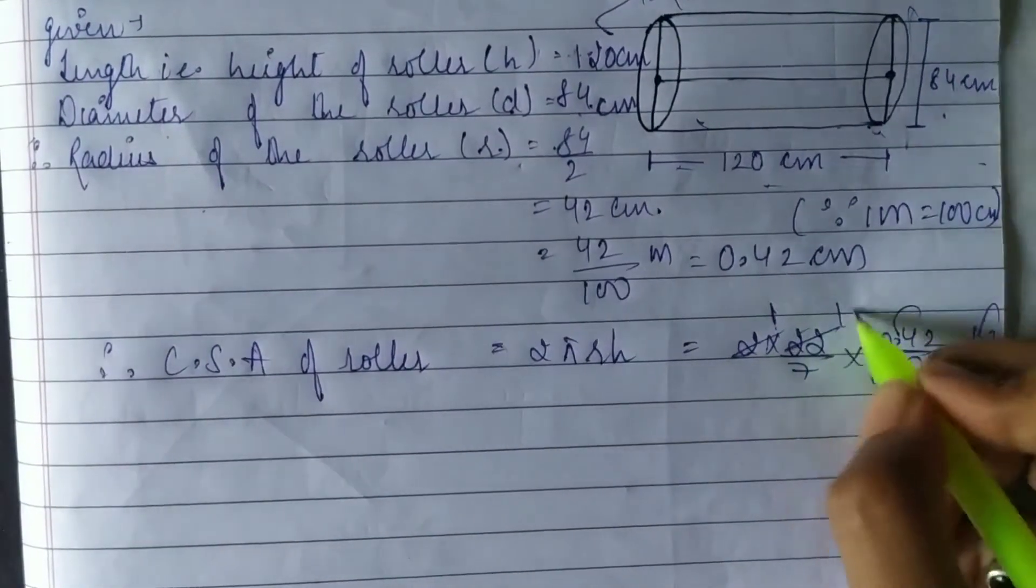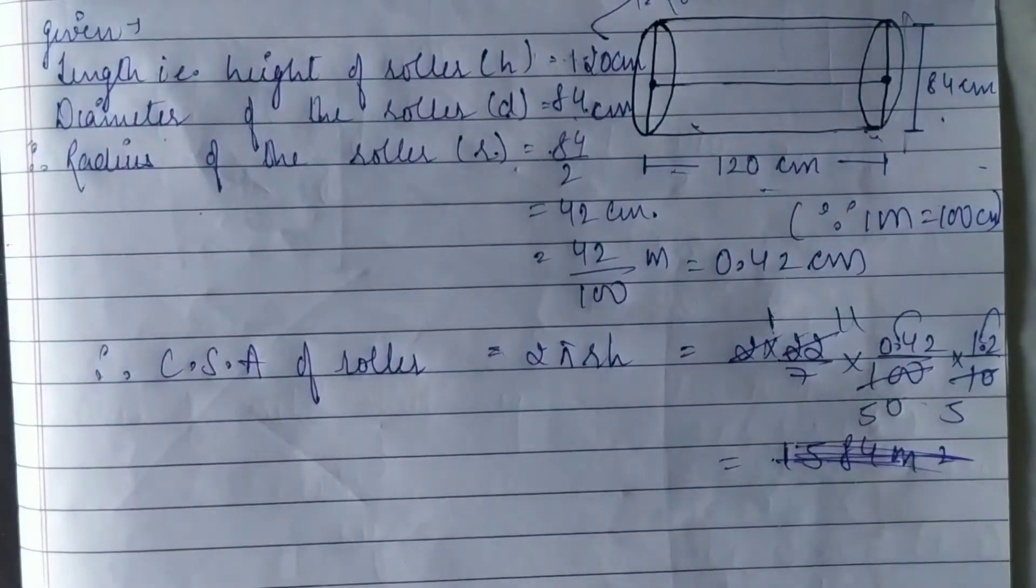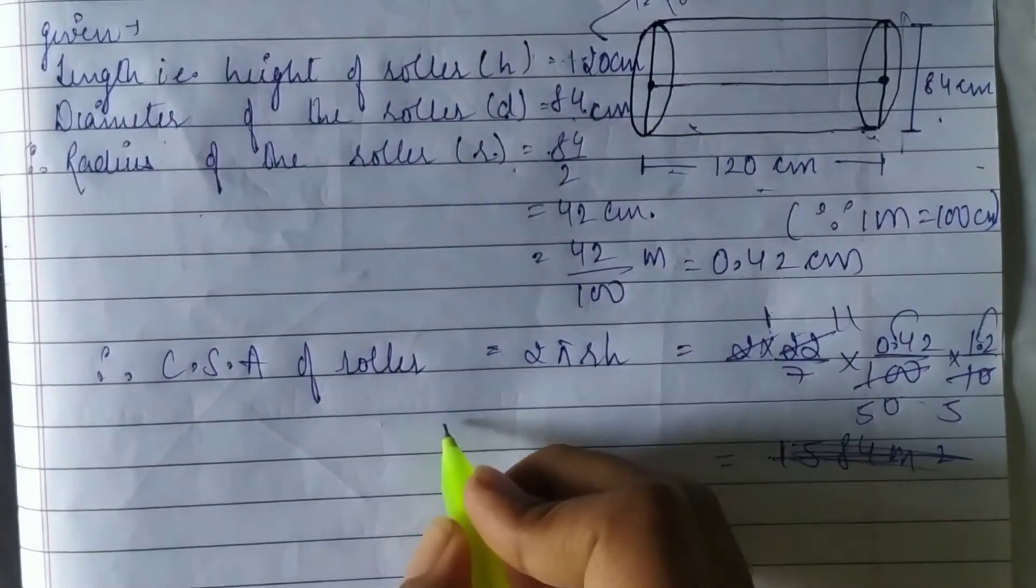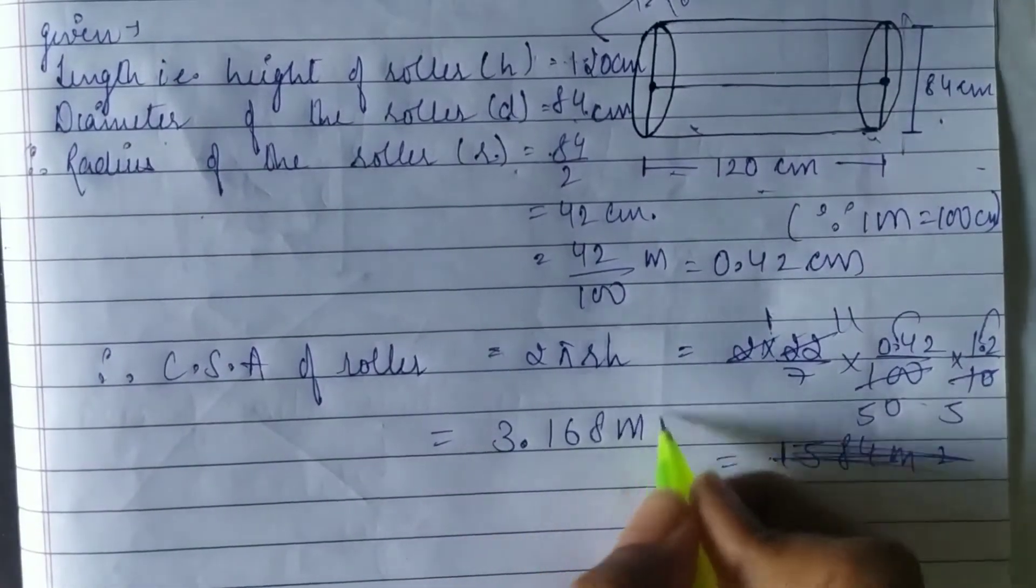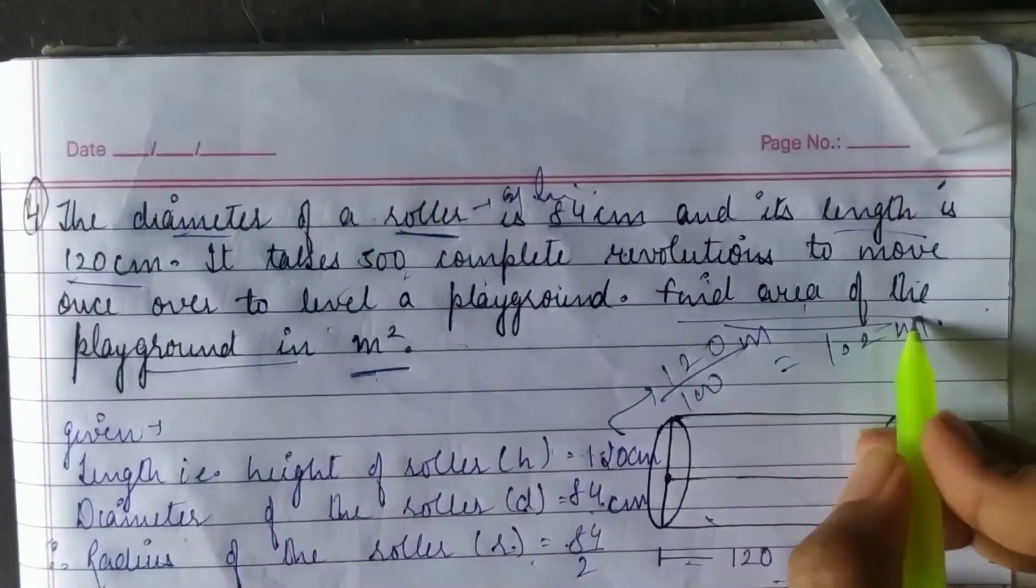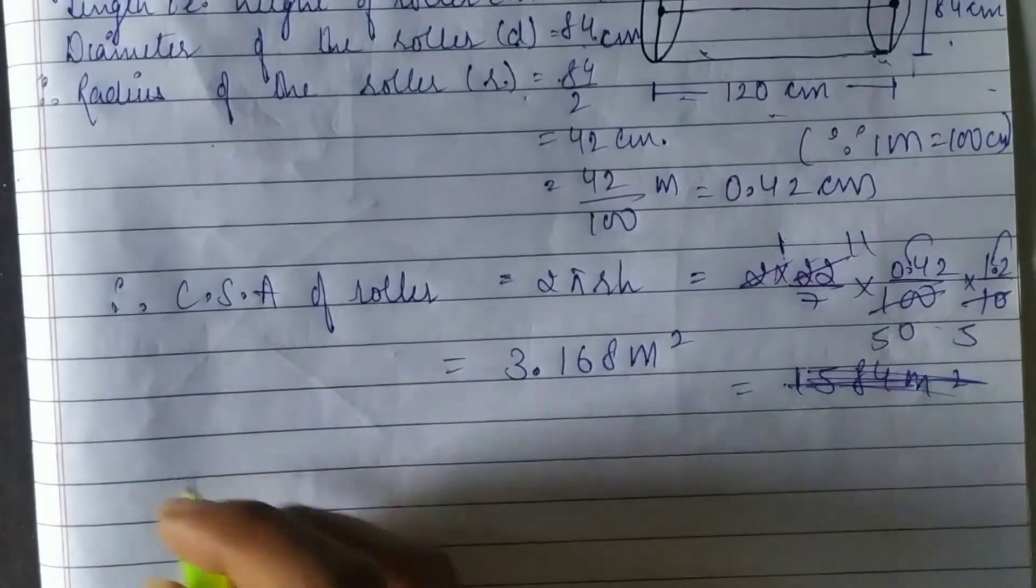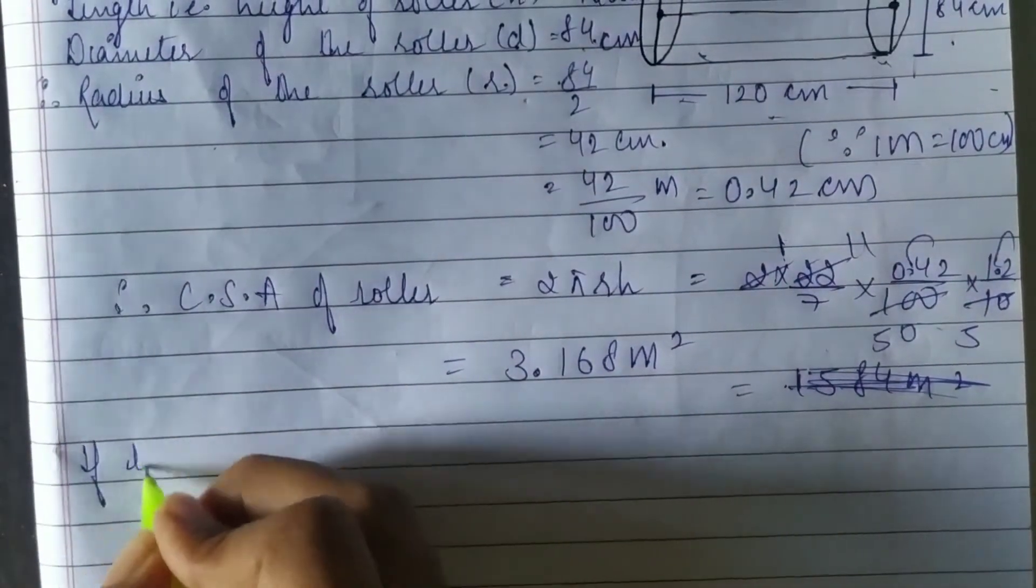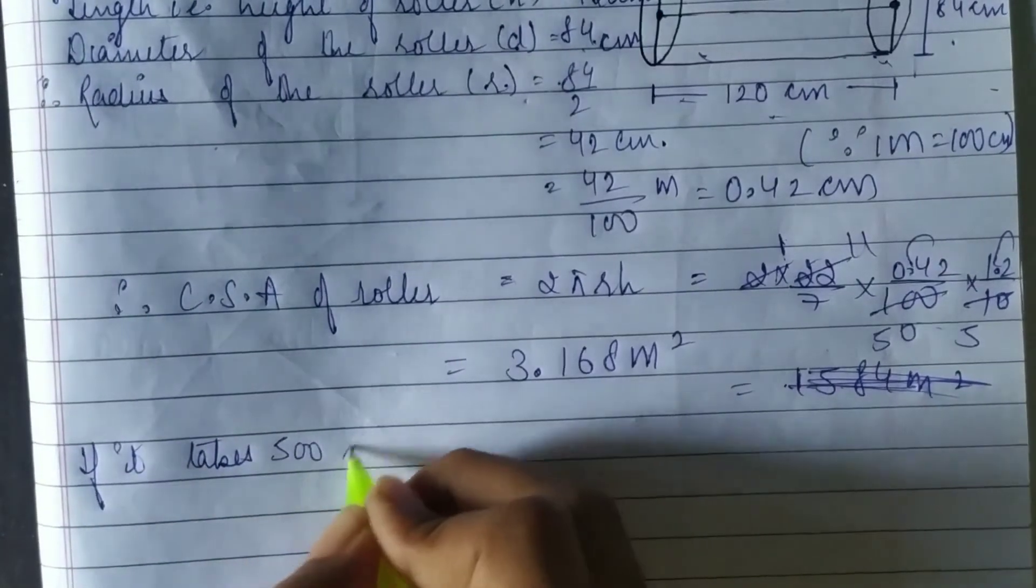Continuing the calculation, we will get 3.168 meter square. Now, since we need to find the area of the ground, we will multiply the curved surface area by 500.